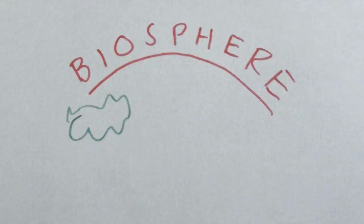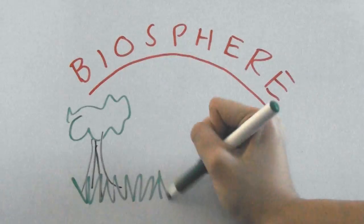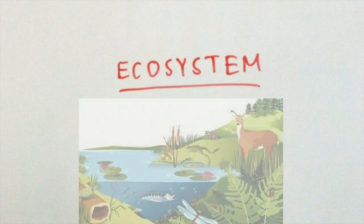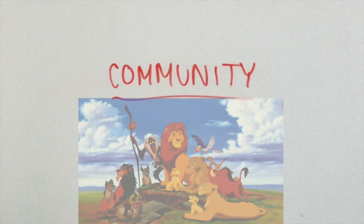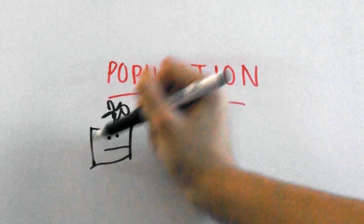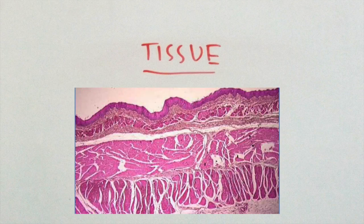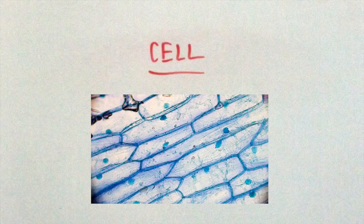The biggest level is what we call the biosphere, which includes the land, water, atmosphere, and organisms of the Earth. Zooming in we see ecosystems, communities, populations, organisms, organs, tissues, cells, organelles, and last but not least molecules.